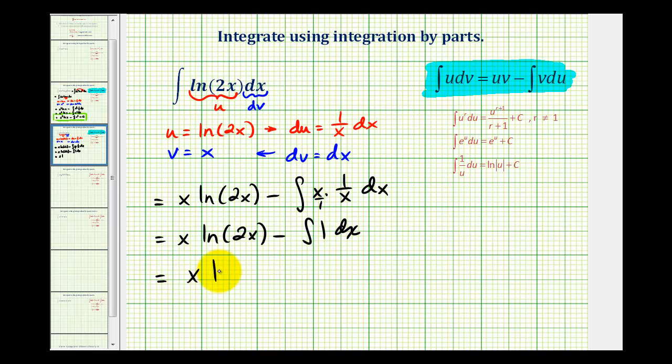So we have x natural log 2x minus the integral of 1 with respect to x, which would be x plus our constant of integration. Here's our anti-derivative.